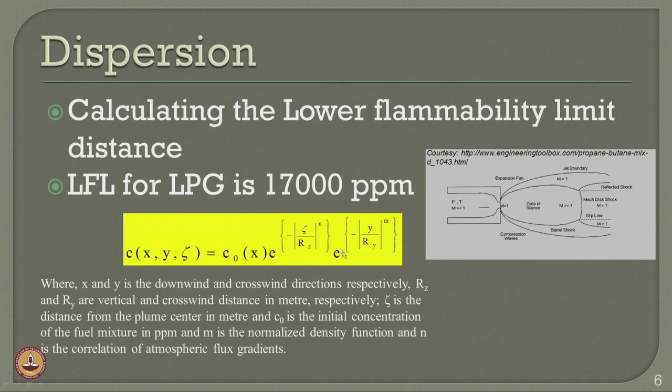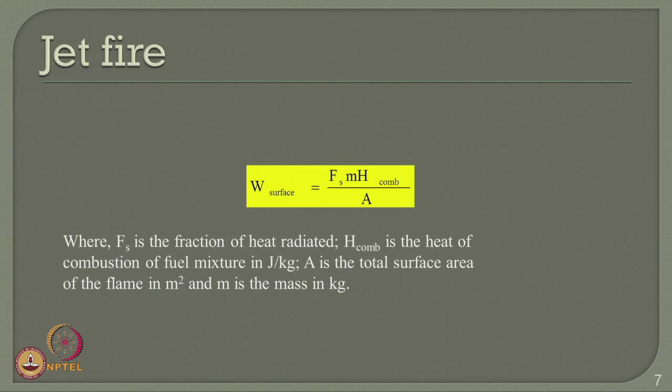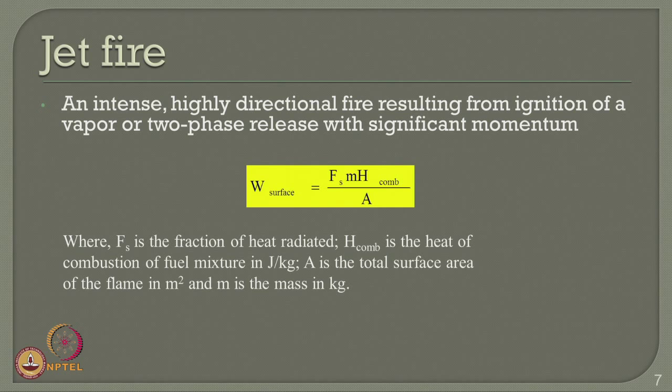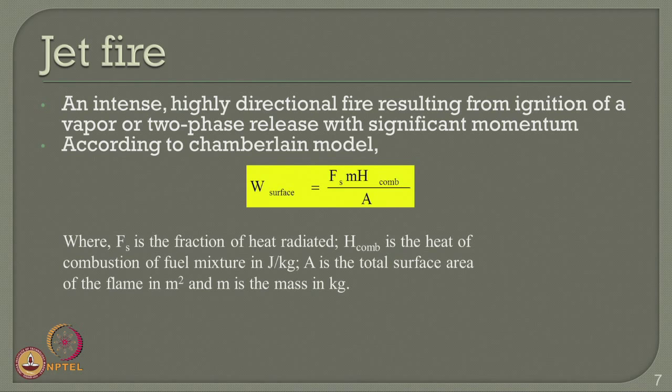The second consequence is jet fire — an intense, highly directional fire resulting from the ignition of a vapor or two-phase release with significant momentum. According to the Chamberlain model, the jet fire value is a function of Fs (fraction of heat radiated), H-combustion (heat of combustion of fuel mixture in joules per kg), A (total surface area of the flame in square meters), and m (mass in kg).